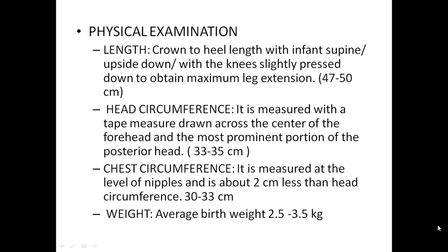Physical examination. For length, the crown to heel length is measured with the infant placed supine with the knees slightly pressed down to obtain maximum leg extension. Normal length is 47 to 50 cm. Head circumference is measured with a tape drawn across the center of the forehead to the most prominent portion of the posterior head; it is 33 to 35 cm. Chest circumference is measured at the level of the nipples, about 2 cm less than head circumference. Average birth weight is 2.5 to 3.5 kg.